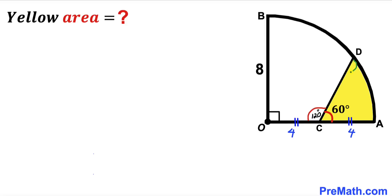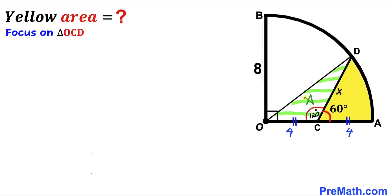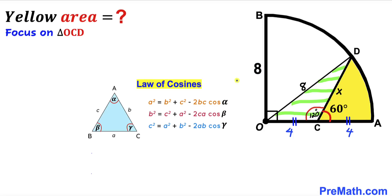Now let me label segment CD as X units. In the next step I have connected center O with point D, and as a result we get triangle OCD. We know that length OD is the radius of this quarter circle, and we know the radius is 8, so therefore OD is 8 units.